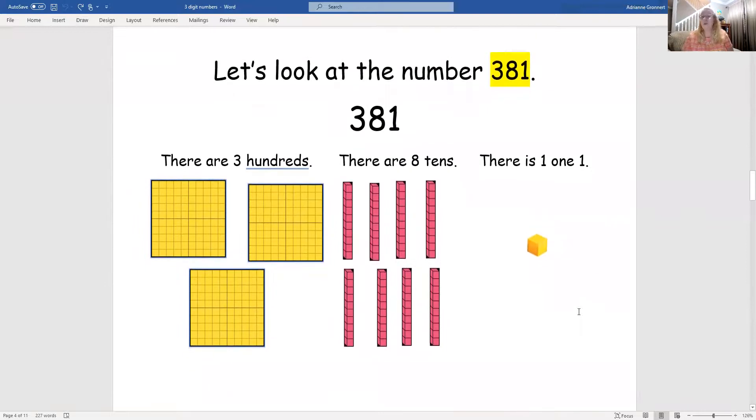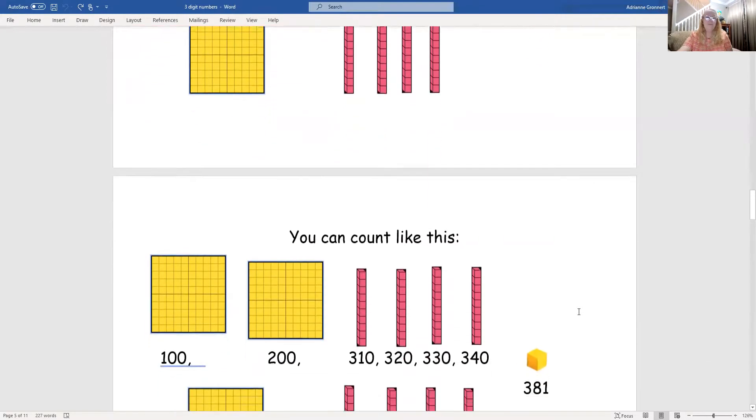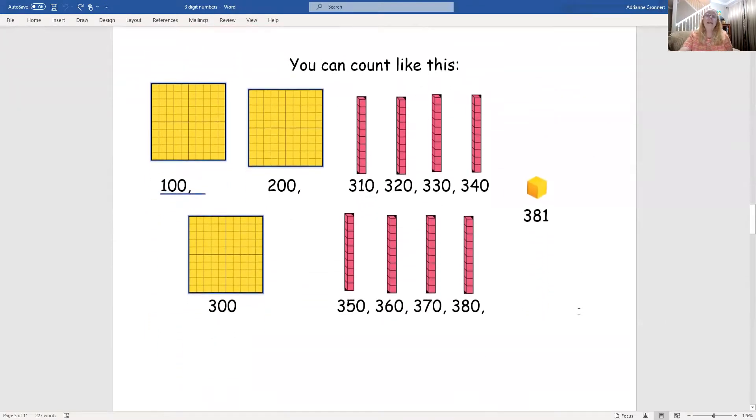Let's take a look at the number 381. In this number, there are three hundreds, there are eight tens, and there is one one. Notice how we can represent that number with the base 10 pieces. You can count like this.